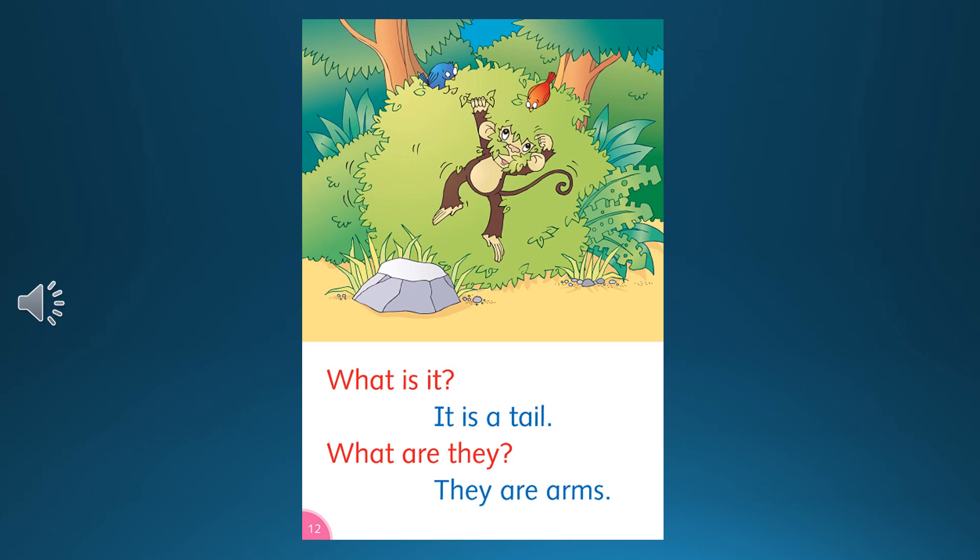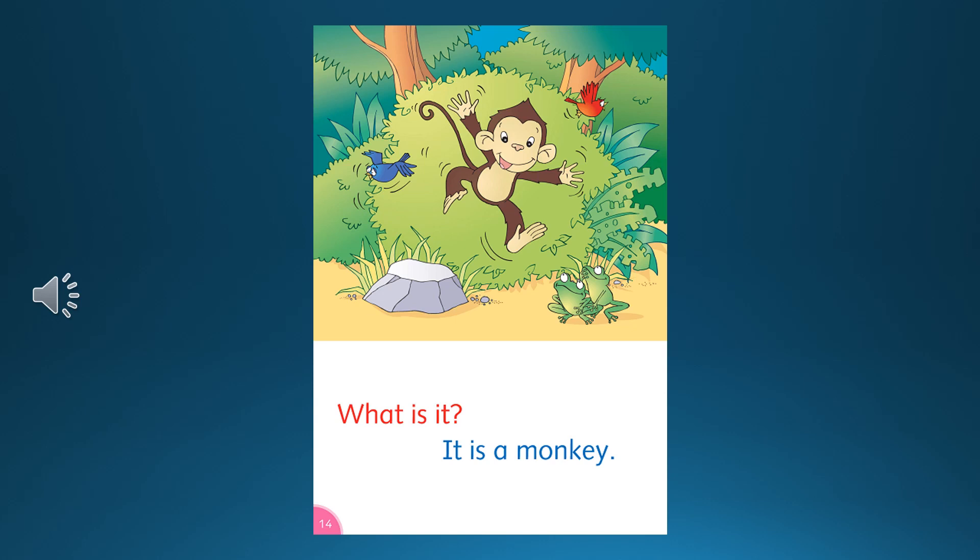What is it? It is a tail. What are they? They are arms. What is it? It is a monkey.